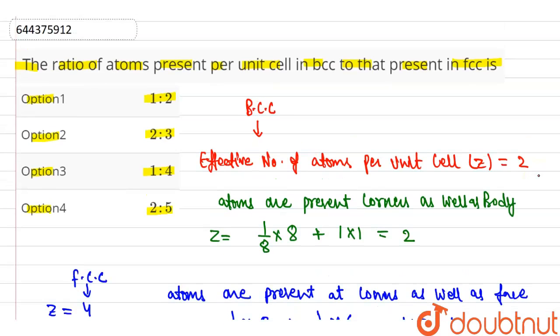So the question asks for the ratio of atoms per unit cell in BCC to that in FCC. In BCC it's 2, and in FCC it's 4, so the ratio is 2:4, which equals 1:2. Therefore, the correct option is option 1: the ratio is 1:2. Thank you.